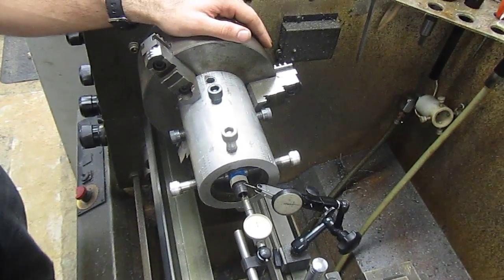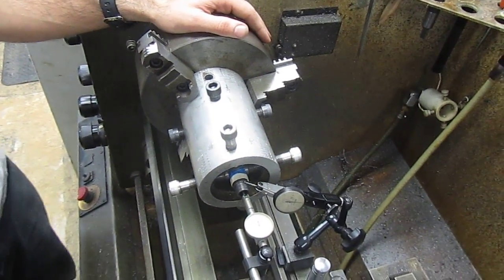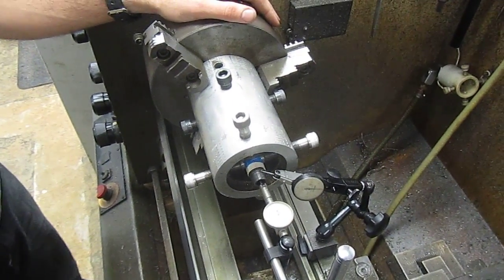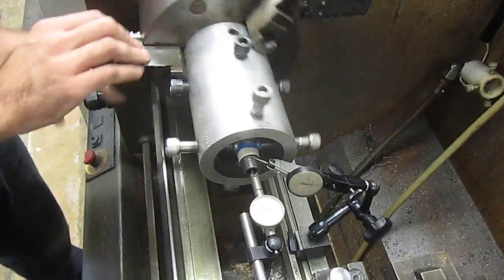This is Mark at Short Action Customs. What we have here is a HK45 USC barrel that's been cut down. We put it in this action shoring fixture and coaxially indicated it.